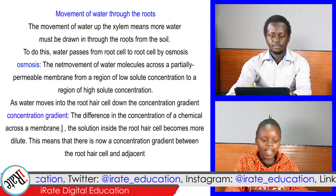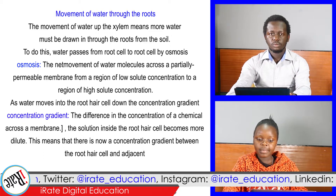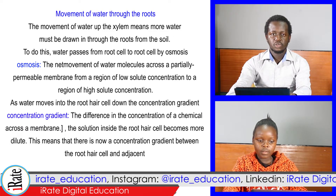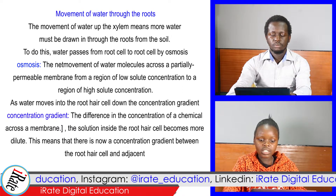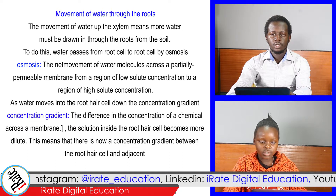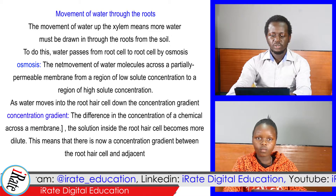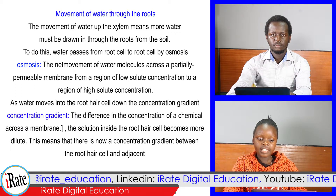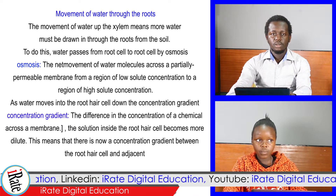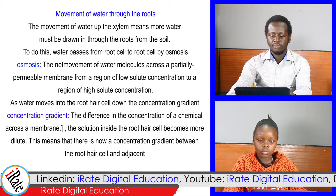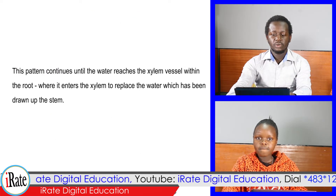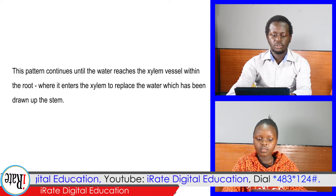The movement of water up the xylem means more water must be drawn in through the roots from the soil. To do this, water passes from root cell to root cell by osmosis. Osmosis is the net movement of water molecules across a partially permeable membrane from a region of low solute concentration to a region of high solute concentration. As water moves into the root hair cell down the concentration gradient — the difference in concentration of a chemical across a membrane — the solution inside the root hair cell becomes more dilute. This concentration gradient pattern continues until the water reaches the xylem vessel within the root, where it enters the xylem to replace the water which has been drawn up the stem.